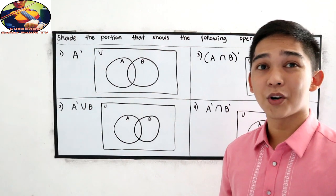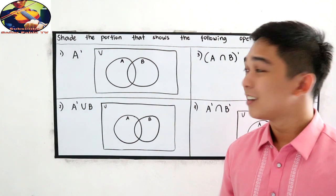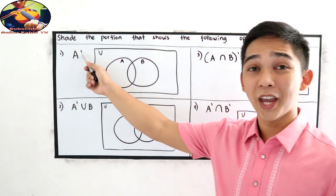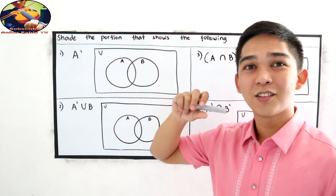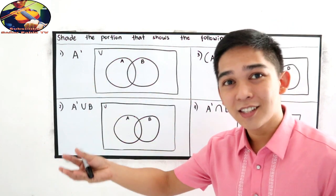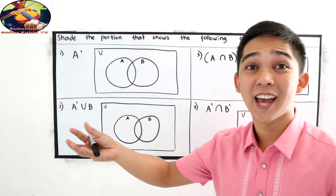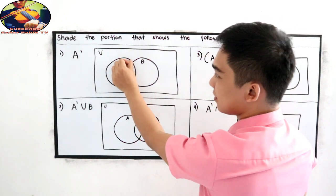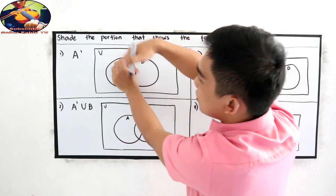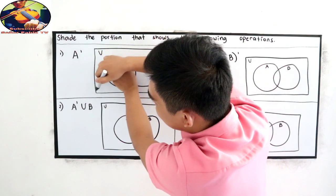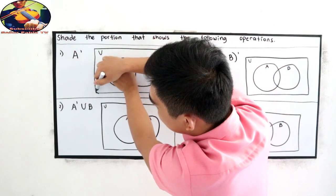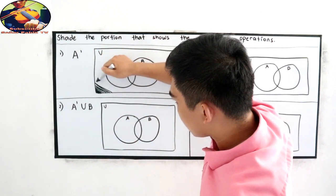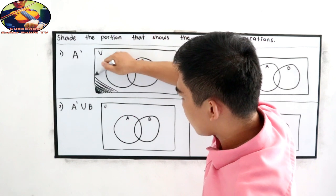Now let's check your work. Number one, A complement. So we're going to shade the portion outside the set A. So cover set A, then shade the outside portion. So let's shade outside A.